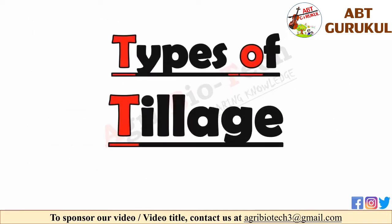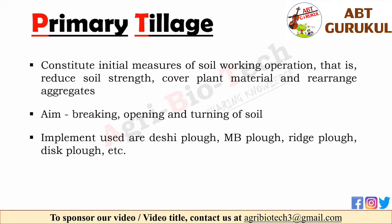Now have a look at the types of tillage. The first type is primary tillage. It is the tillage operation which constitutes the initial measures of soil working. It is normally designed to reduce soil strength, cover plant material and rearrange aggregates, mainly for seed bed preparation. The main aim of primary tillage is breaking, opening and turning of soil. Primary tillage implements include desi plow, ambi plow, disc plow, etc.